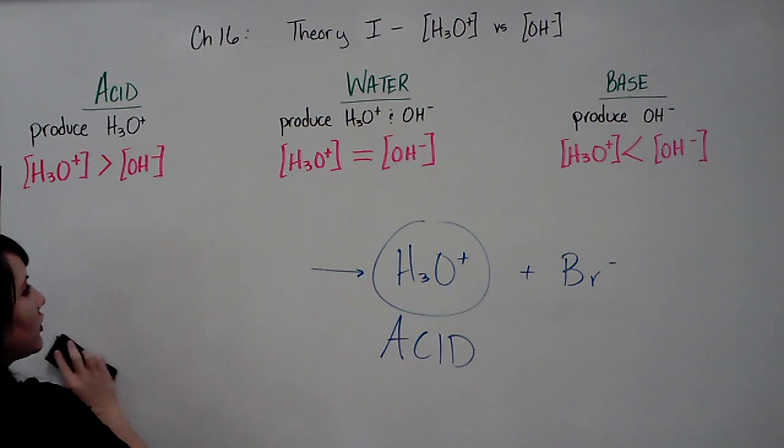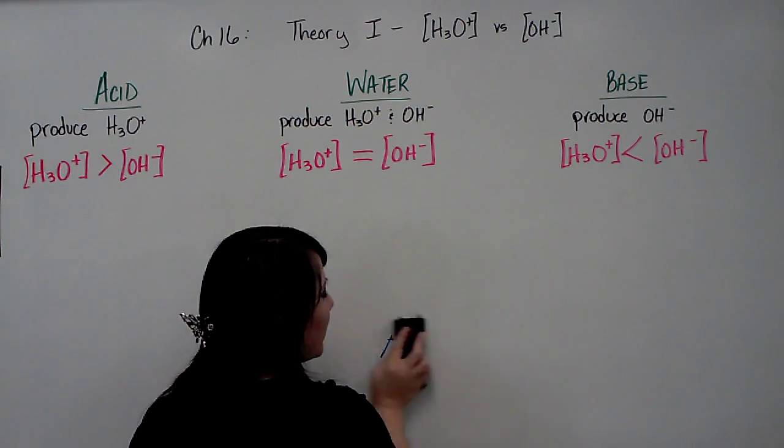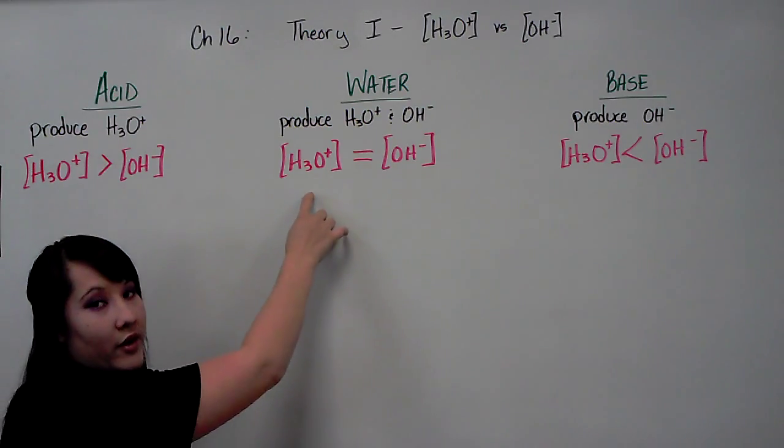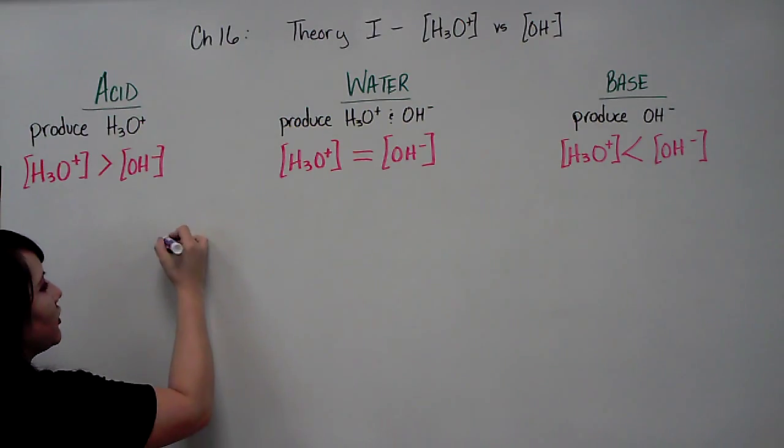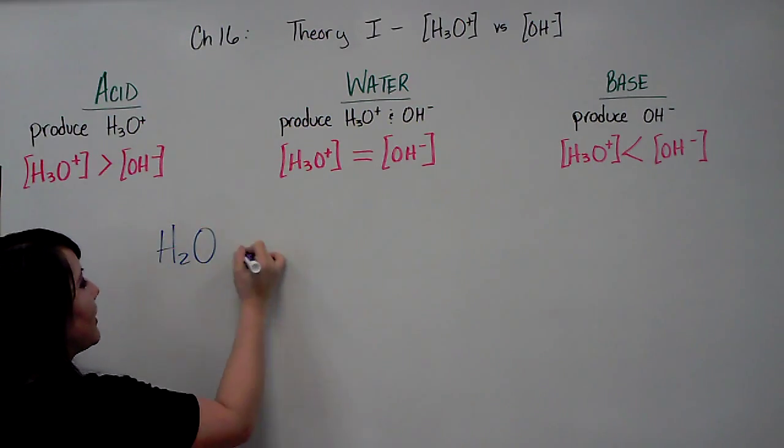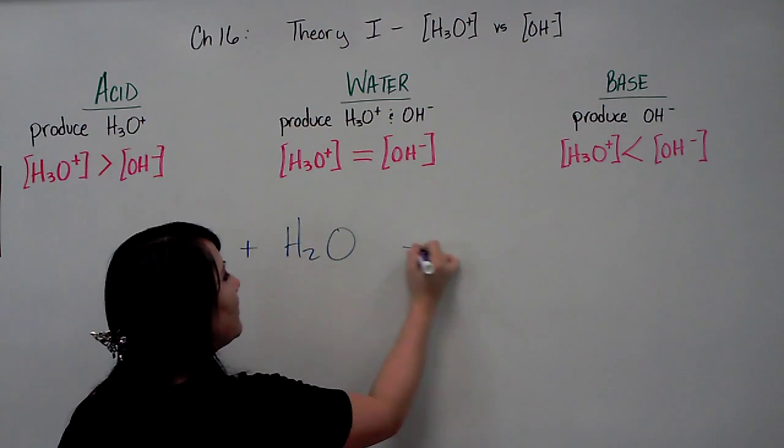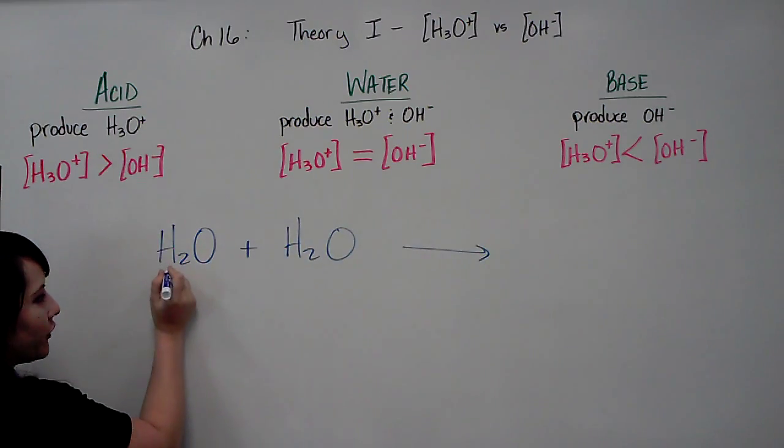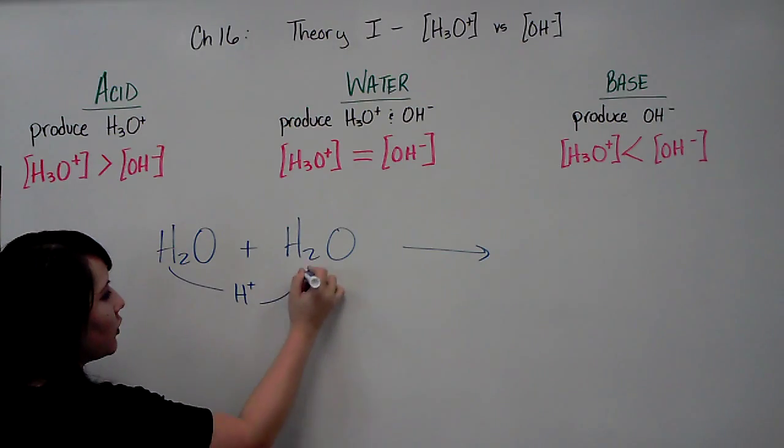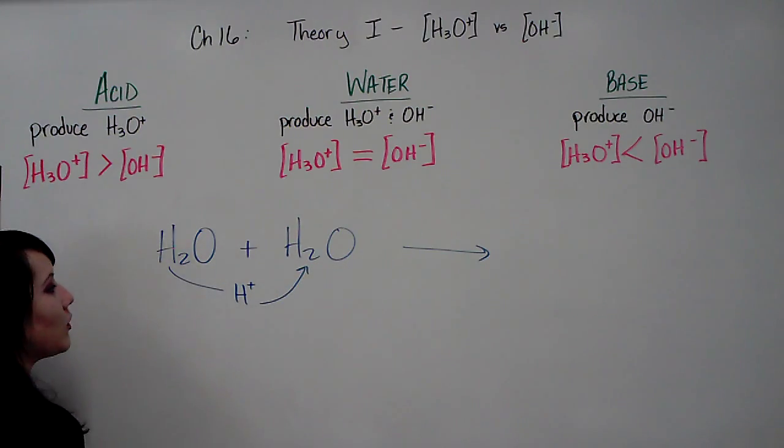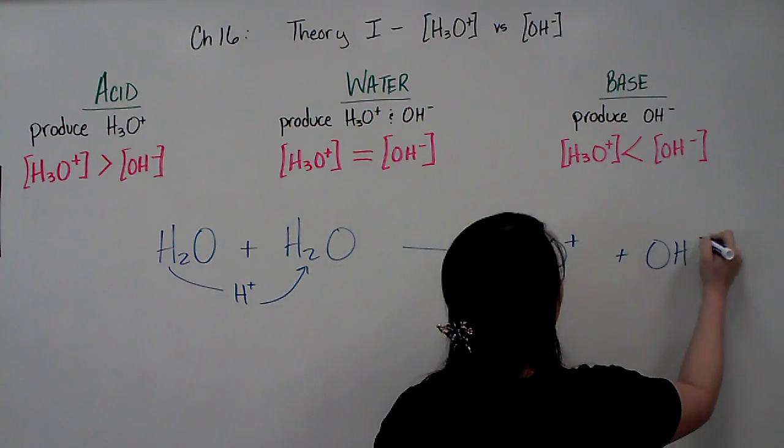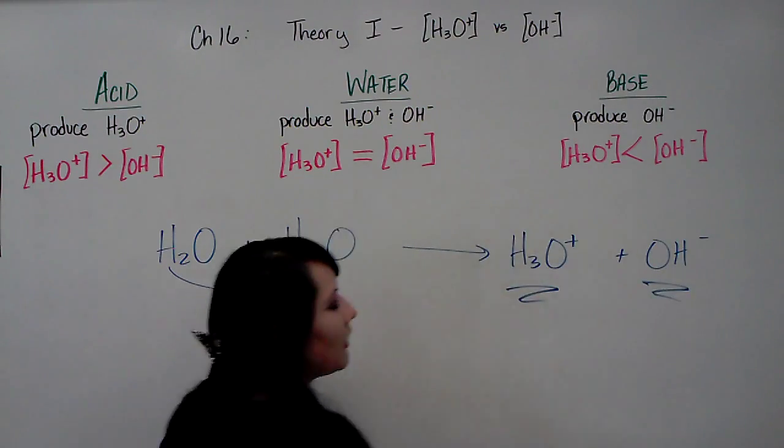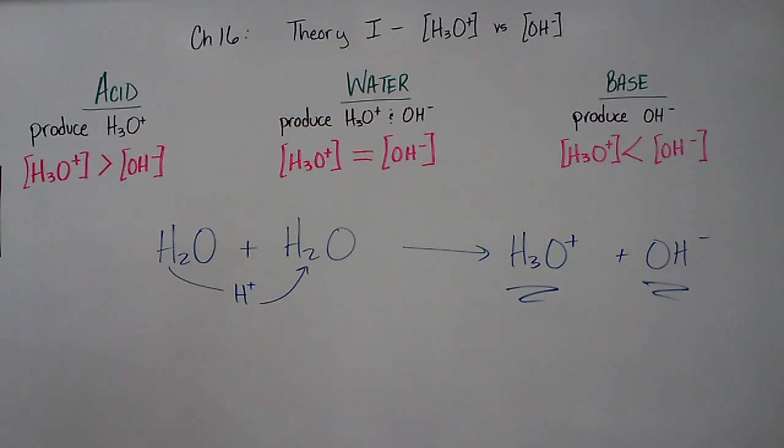A neutral solution would be water because water contains an equal amount of hydronium and hydroxide. Water goes through a process known as self-ionization where the hydrogen from this water would transfer over to the other water and you would end up with hydronium and hydroxide. So it is because you end up with both of those in a water solution that makes it equal and makes it neutral.